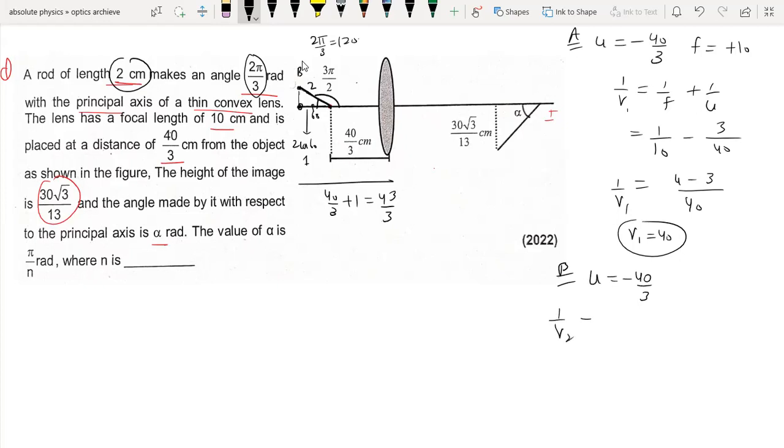So V2 equals 1 by F plus 1 by U. This is 1 by 10 minus, actually it's 43 by 3.